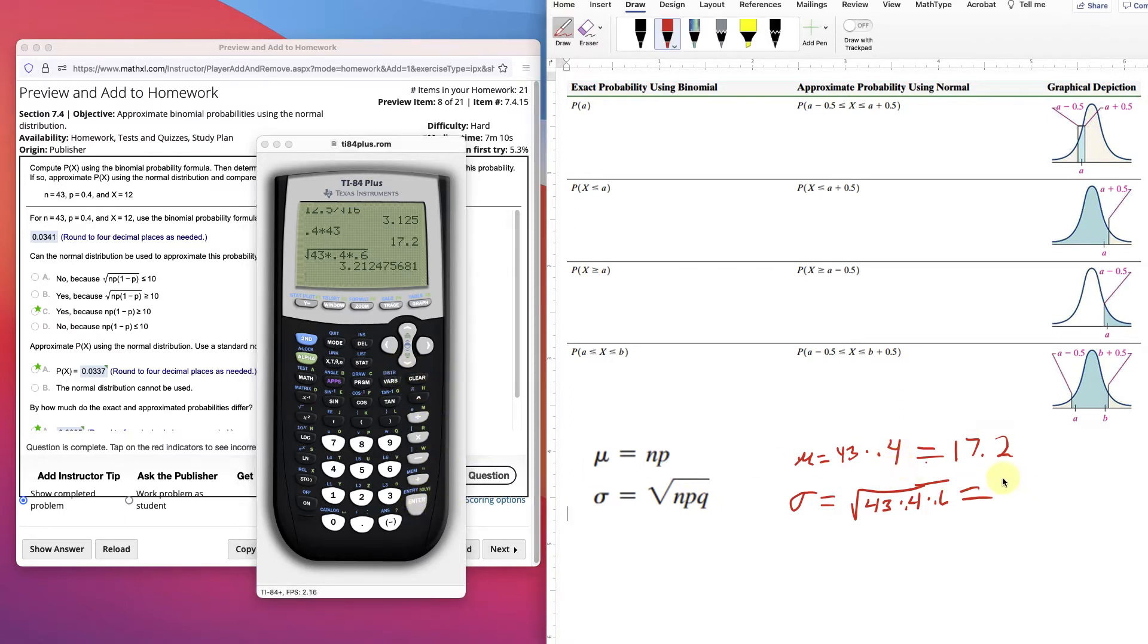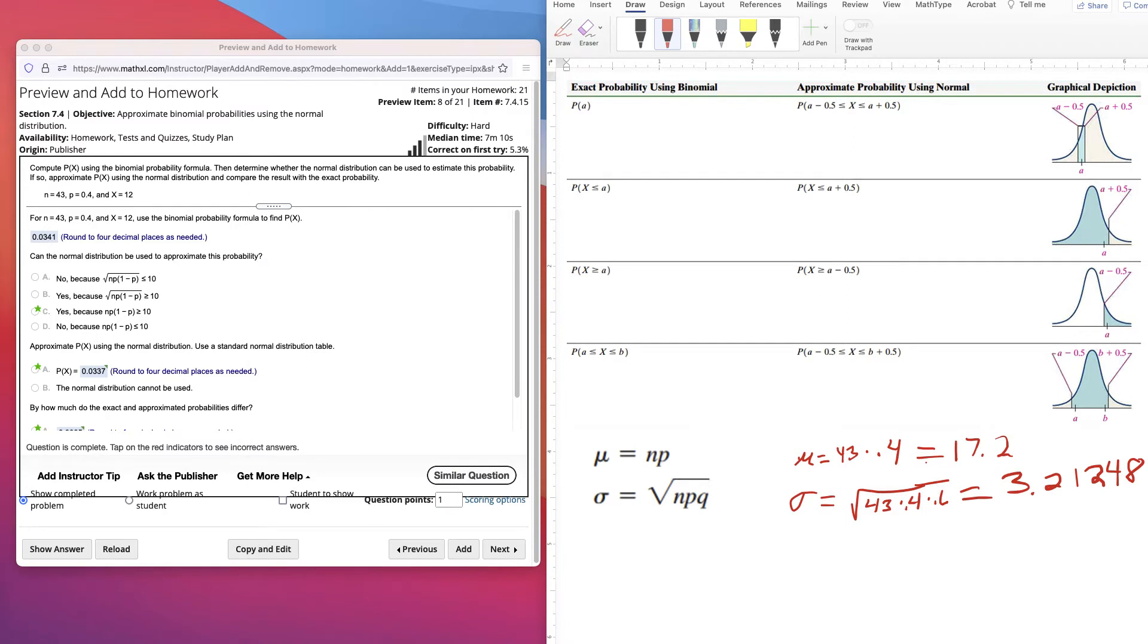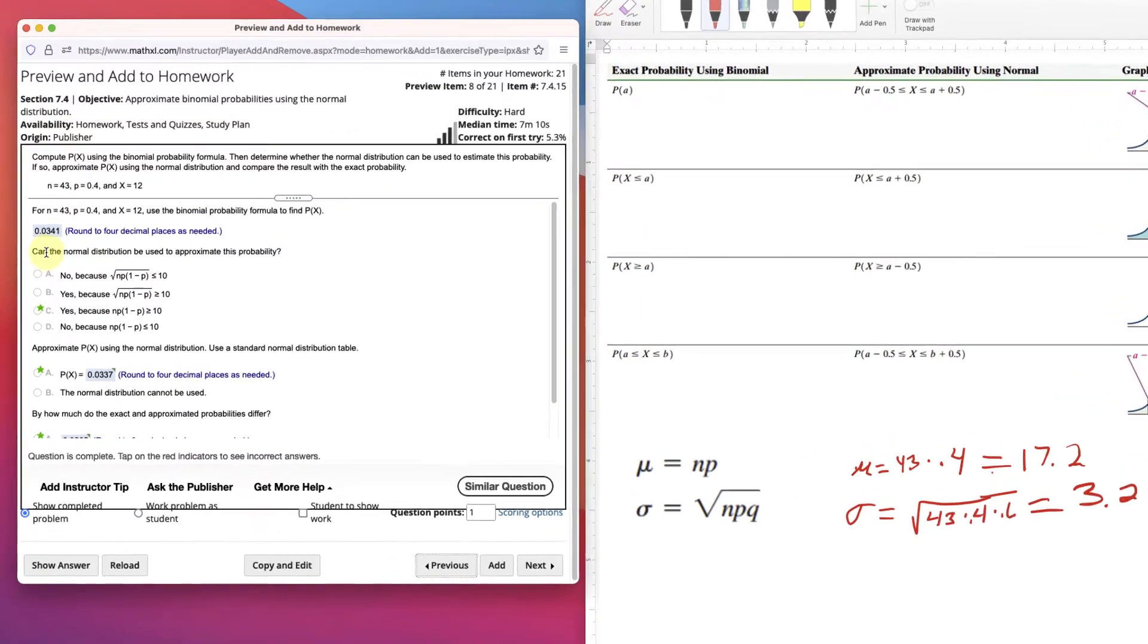3.2124... We'll go on a little bit. So there's our standard deviation and mean. Now, I should have probably checked this first, even see if we can use the normal approximation on here. It says, can the normal distribution be used?